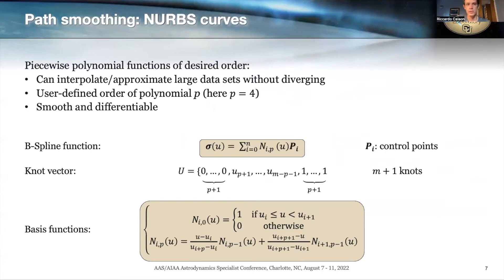NURBS stands for non-uniform rational B-spline curves. They are piecewise polynomial functions that can fit a large amount of data without diverging. They can be of whatever order is desired; in this case we use an order of p equal to 4. These functions are smooth and differentiable — specifically with an order of 4 we get C3 functions, continuous and differentiable up to the second-order derivative. A B-spline function is defined as a linear combination between basis functions N_ip and control points P_i. The basis functions can be defined using a recursive formula, and the control points are the subject of the least-square approximation.